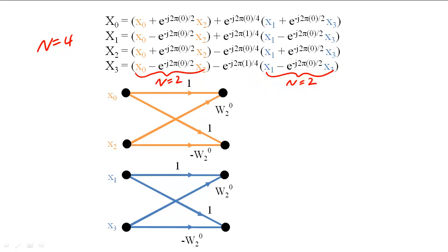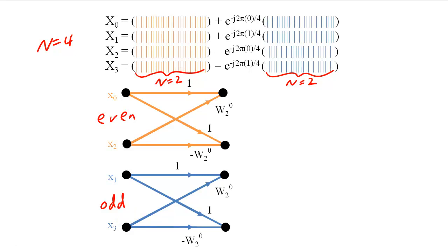Therefore, we can compute the odd and even-sub-DFTs separately using our two-sample DFT algorithm. Once we have computed the odd-and-even DFTs, we see that the four-sample DFT is structured like the butterfly algorithm.